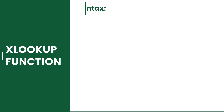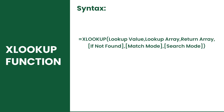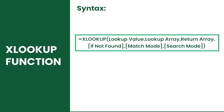The XLOOKUP function searches a specified value and returns a value that is found on the same row or column of that lookup value. The function runs using six arguments, where the first three are required and the other three are optional.